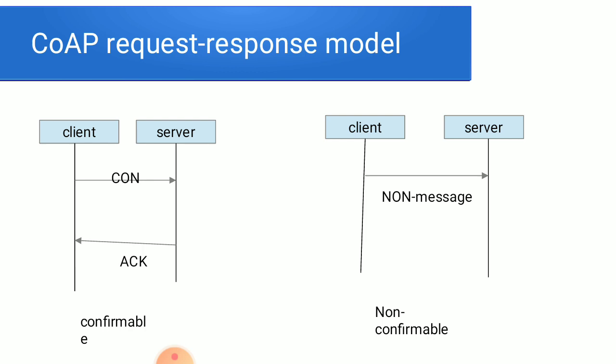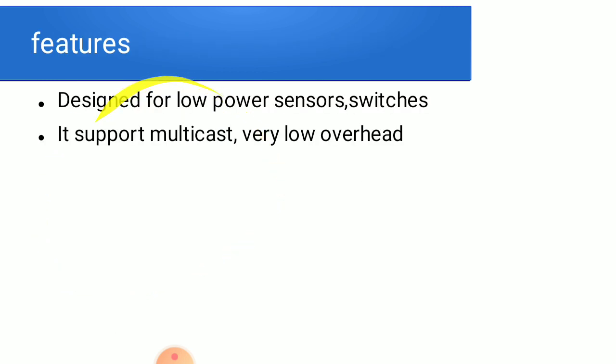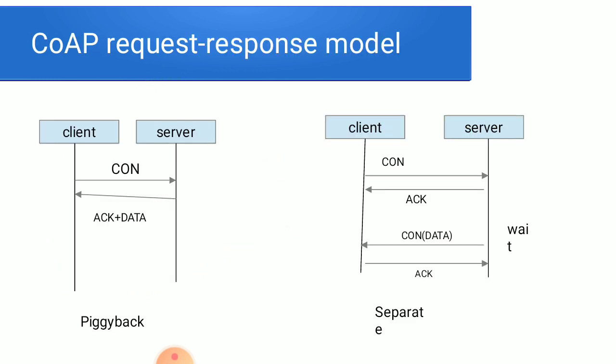In the non-confirmable type, the client sends to the server without a known messaging method. In the piggyback type, the acknowledgement and data response from the server are combined together and sent to the client.